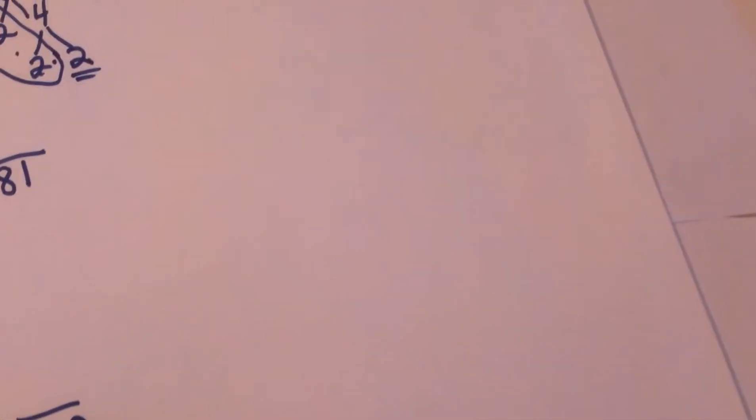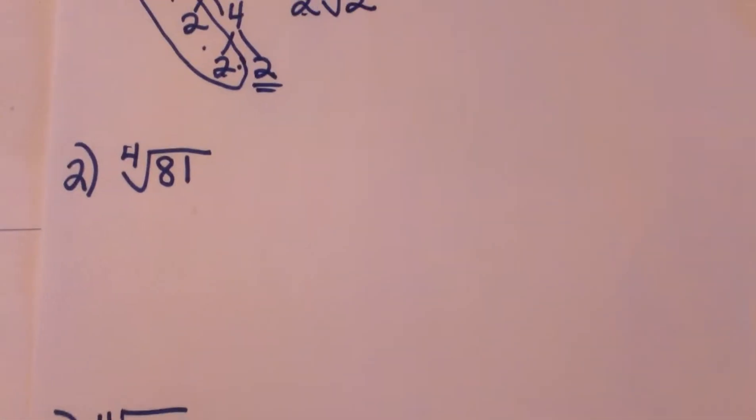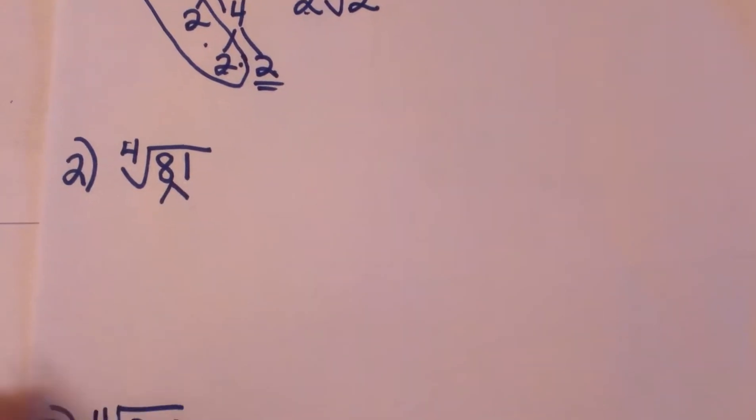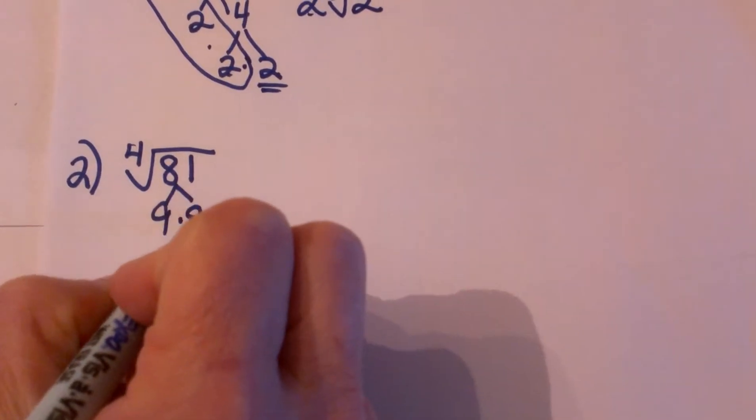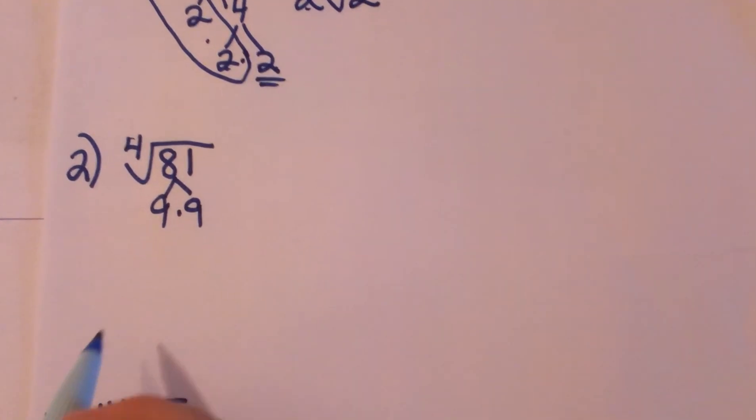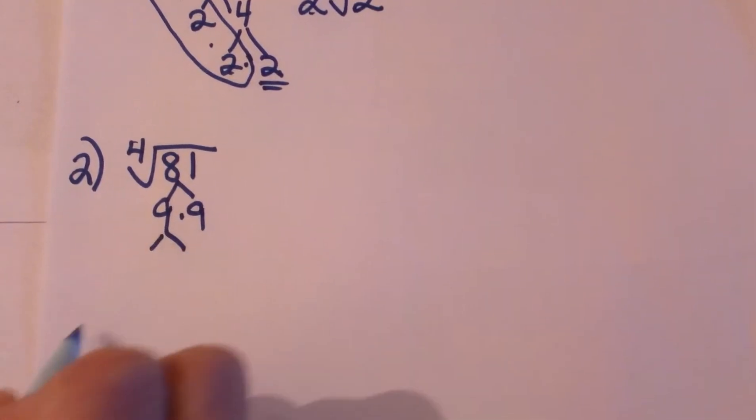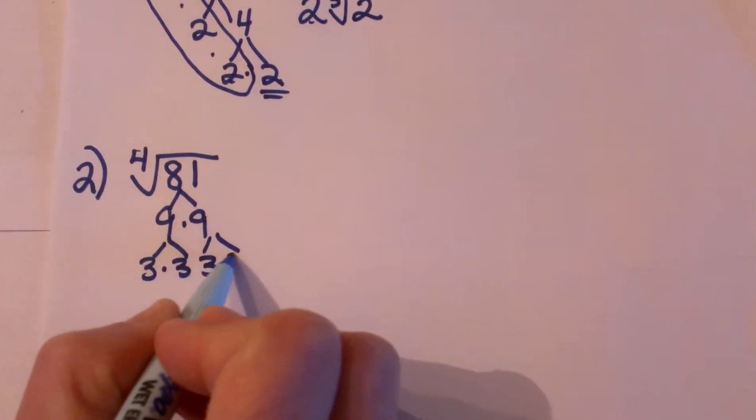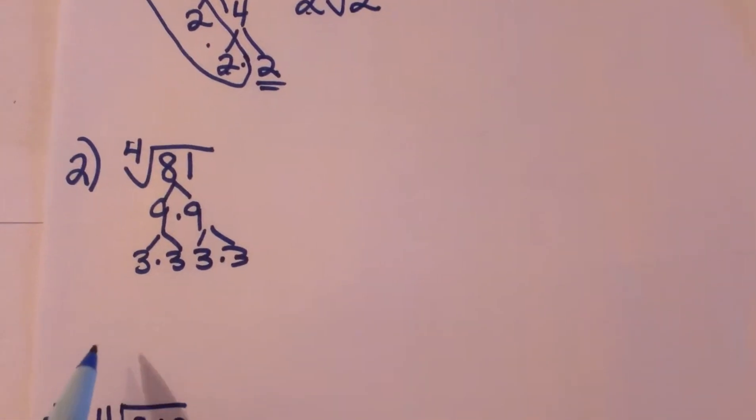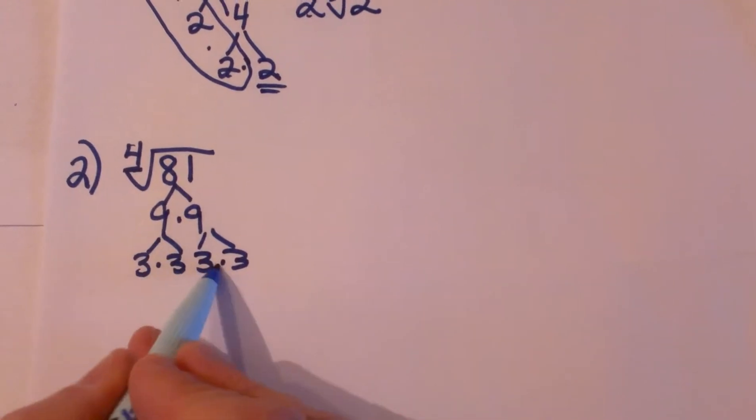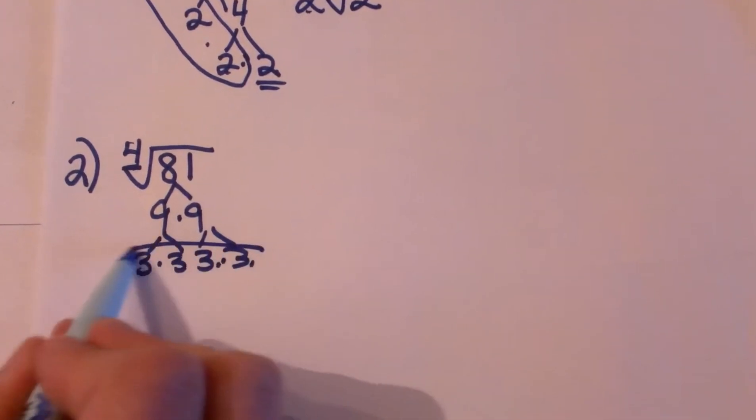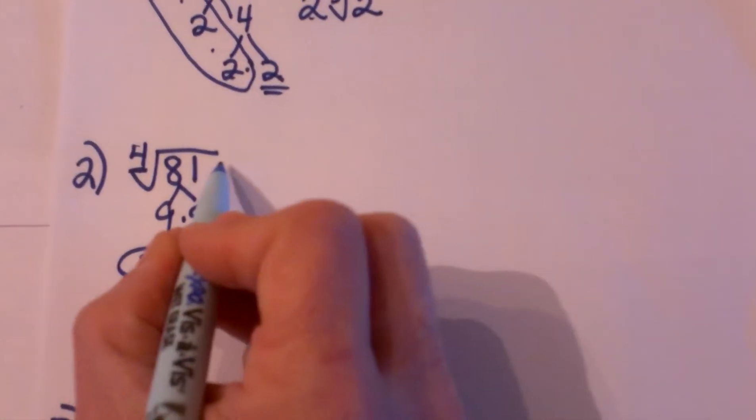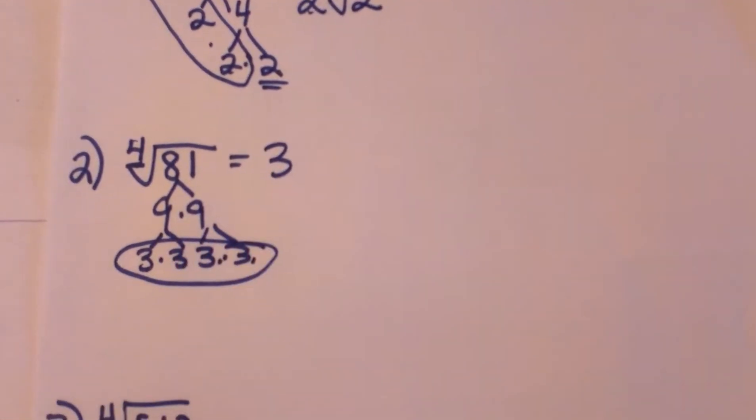Now in fourth roots we have to have four factors. So let's try to find some factors of 81. Well, 81 obviously is 9 times 9, but that only gives us two factors. So let's break the 9 down to 3 times 3 and 3 times 3. This time we needed four of these and we have four and none left over, so that means this is a nice even fourth root. So the fourth root of 81 is just the whole number 3.